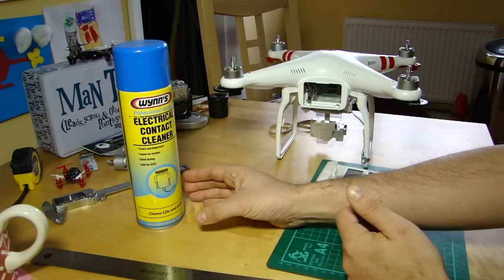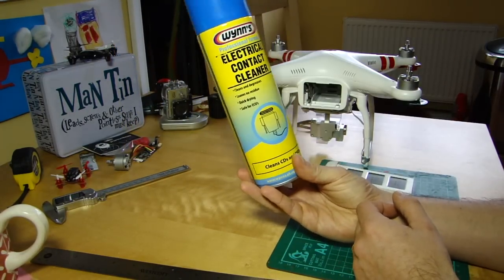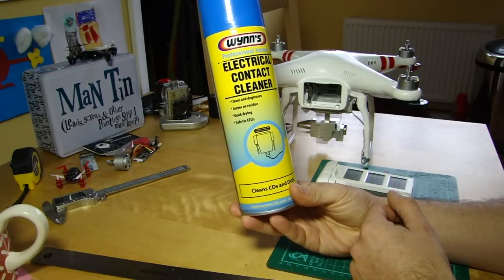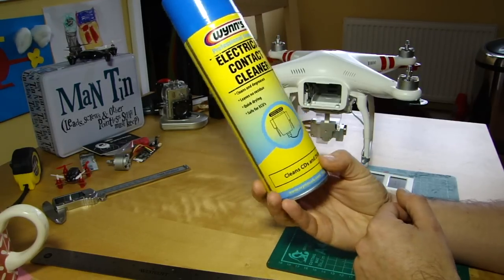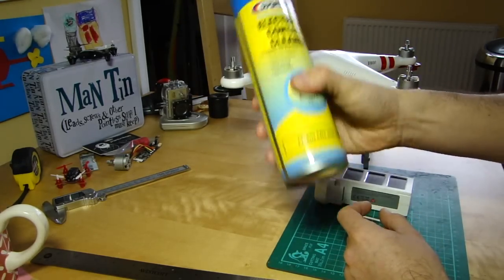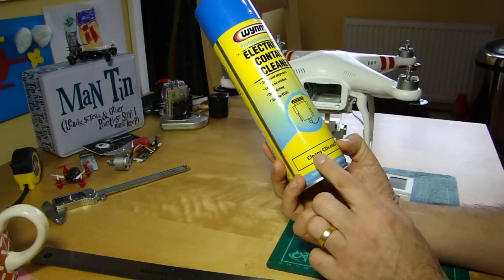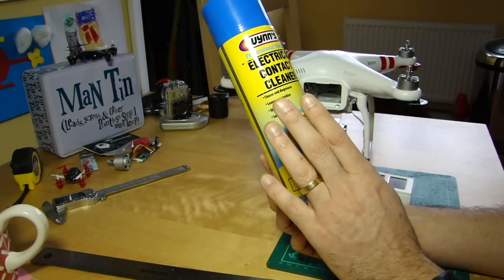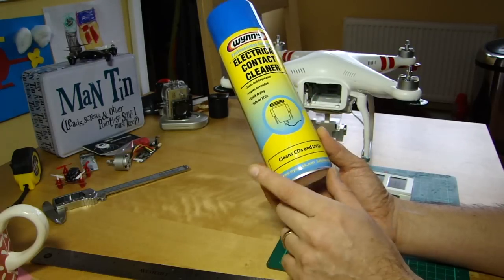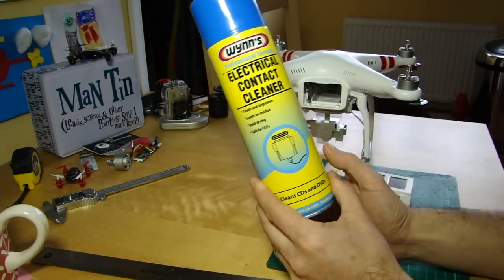For those of you been watching for a long time this was often in the background in the early days when I had the original Vision. It's Wynn's electrical contact cleaner - it's a UK company that's not available in the US but I just bought this from Amazon. There's still about two-thirds left, it goes a long way. It's plastic safe, electrical contact safe and electronic safe, it leaves no residue, it dries very quickly. It'll also clean your CDs and DVDs. I'll put a link in the description - it's available from Amazon in the UK.